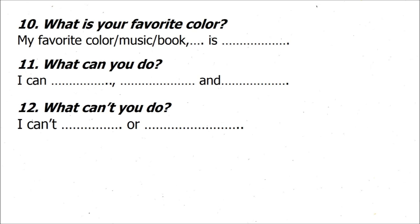Eleven: What can you do? I can — you can mention one, two or three things that you can do. Twelve: What can't you do? I can't — you can mention one or two things that you cannot do.